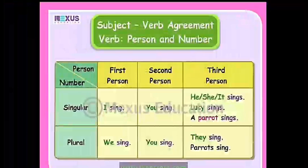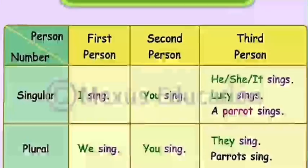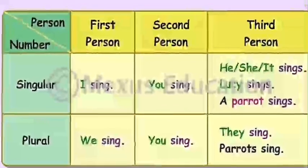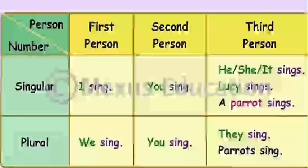Looking at the table: singular first person — 'I sing'; singular second person — 'You sing'; singular third person — 'He/She/It sings'; also 'Lucy sings,' 'A parrot sings.' For plural: first person — 'We sing'; second person — 'You sing' (used for both singular and plural); third person — 'They sing,' 'Parrots sing.' So: singular subject takes singular verb; plural subject takes plural verb.